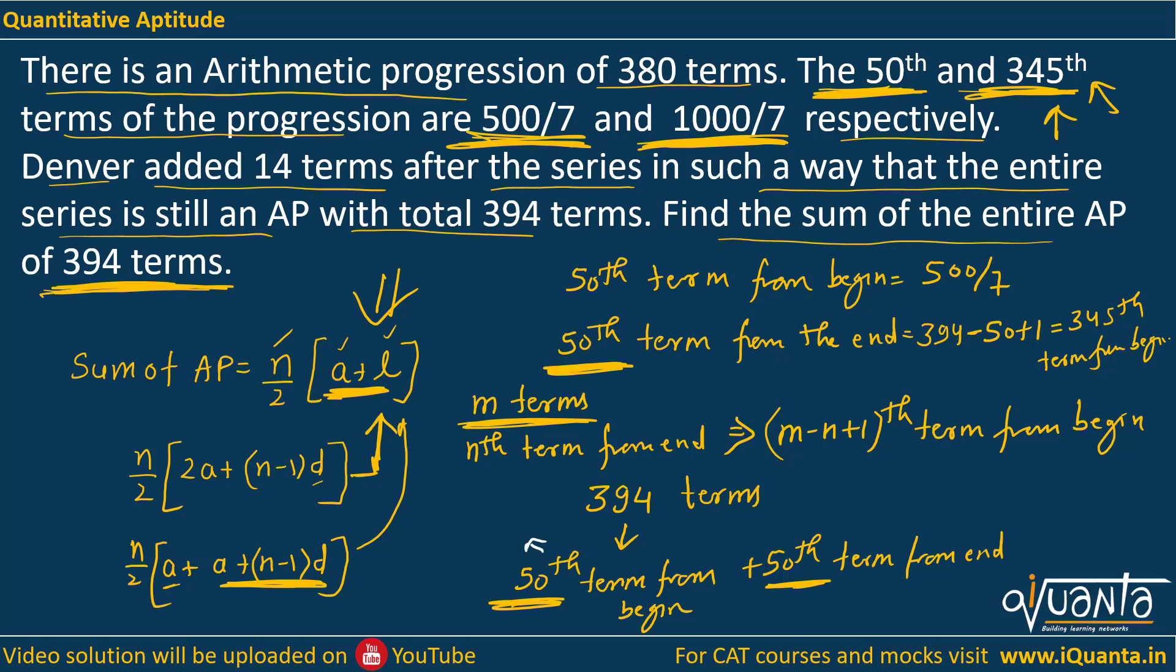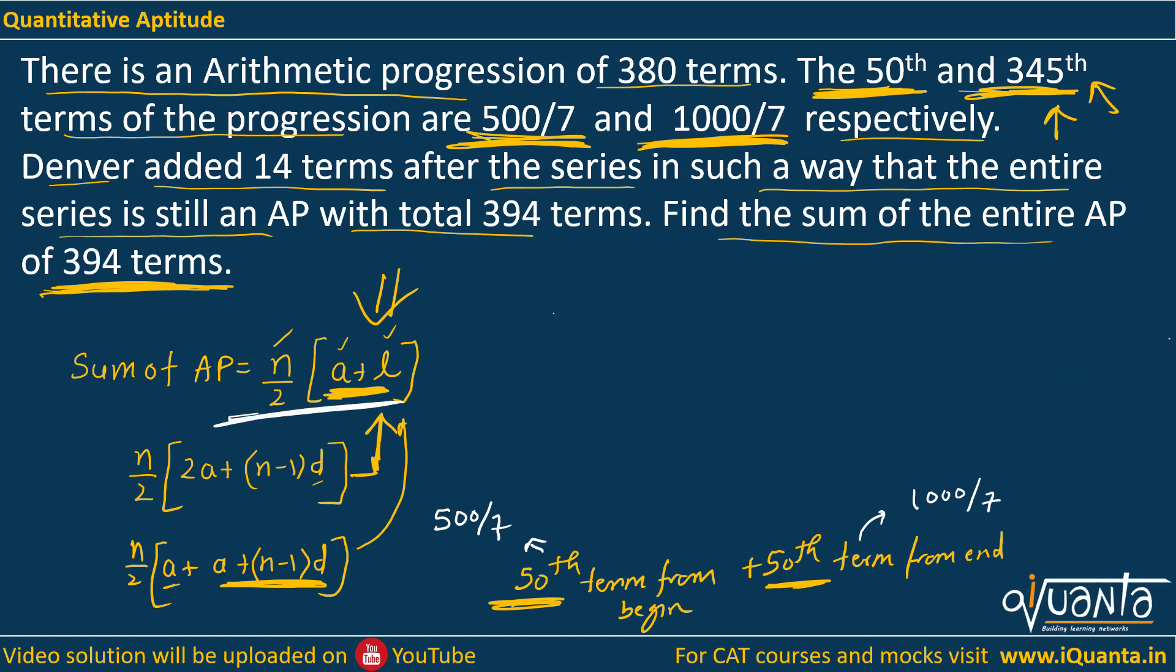So now I can easily find out the sum. Now I have 50th term from the beginning here, this would become 500 by 7, and 50th term from end would become nothing but 345th term from the beginning. This would be 1000 by 7, it is given to us. So now I need to apply this formula n upon 2, a plus l. So we have 394 terms, n upon 2, a plus l, it will be nothing but 500 by 7 plus 1000 by 7.